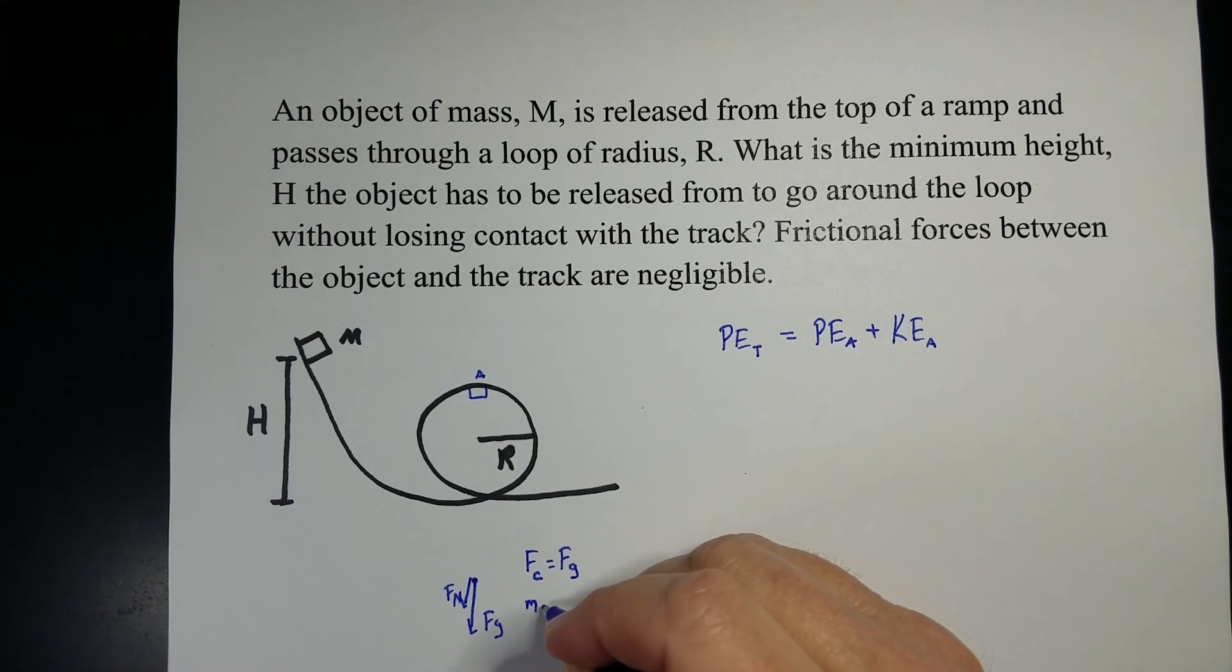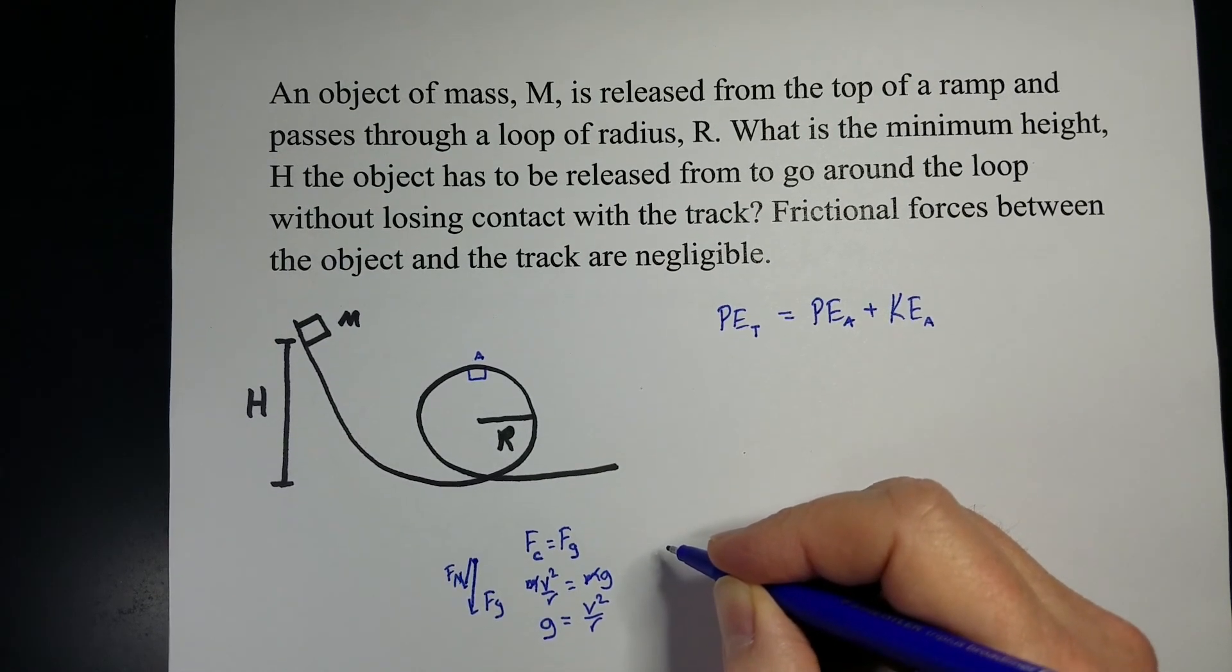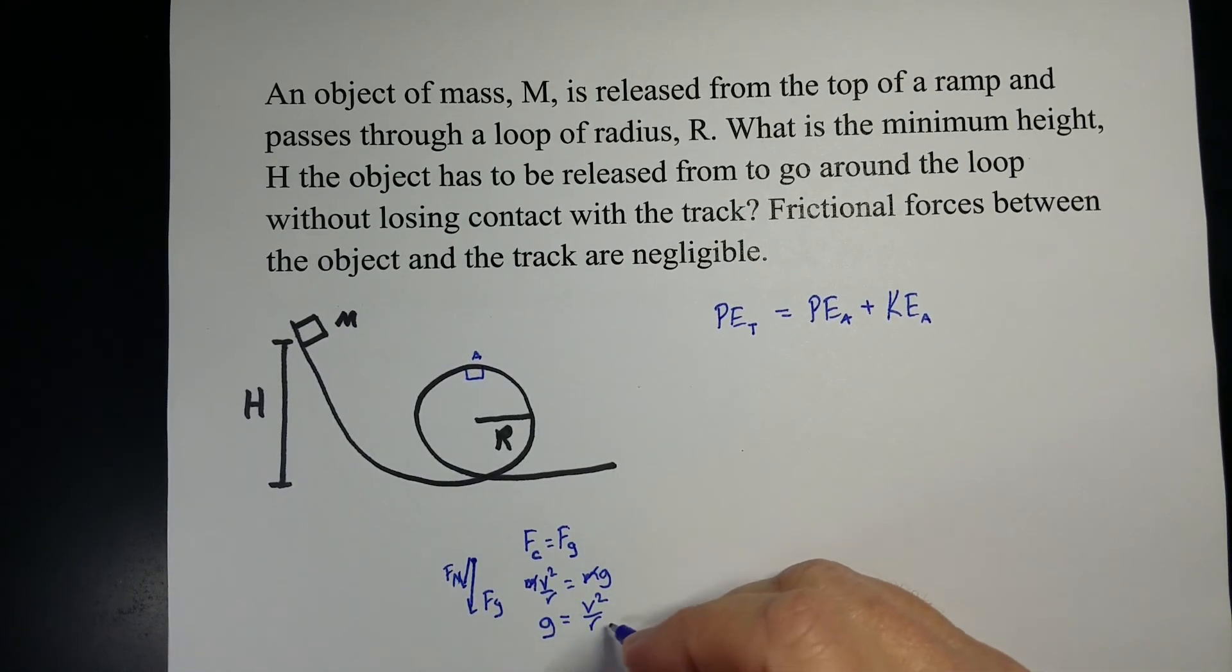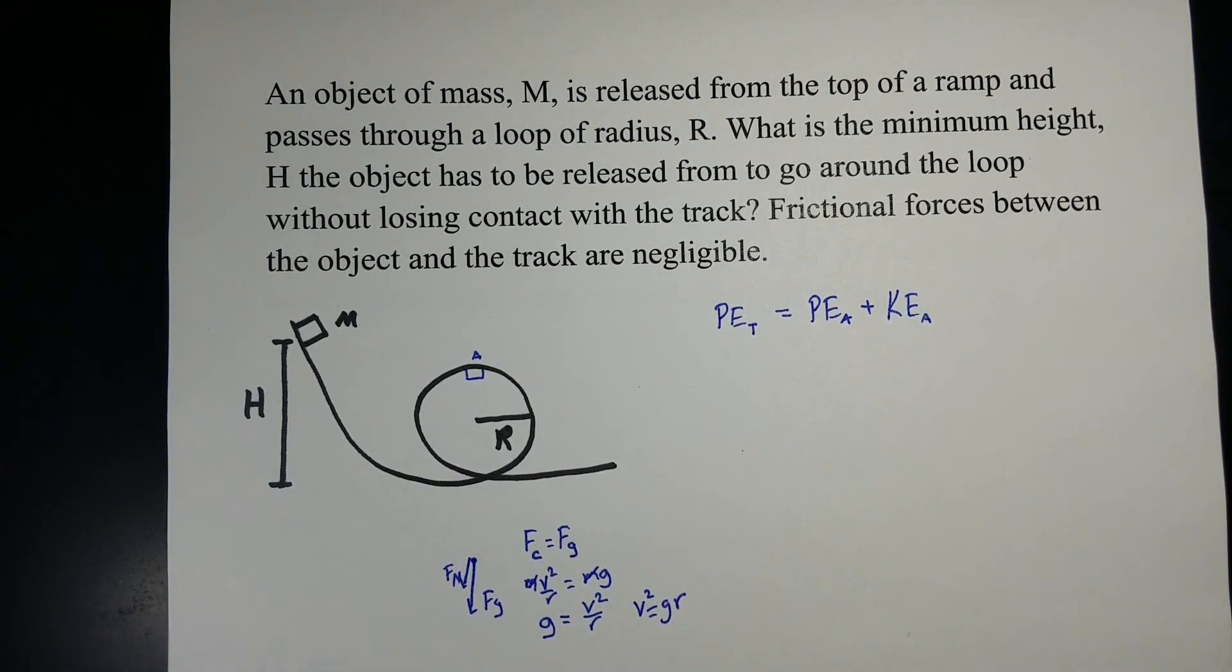Since centripetal force is mv squared over r, and weight is mg, masses cancel. And so, the very minimum speed that we can use is, solving for that, v squared equals gr. Now I'm going to leave that for right now, as is. Let's go back and look at this energy part up here.